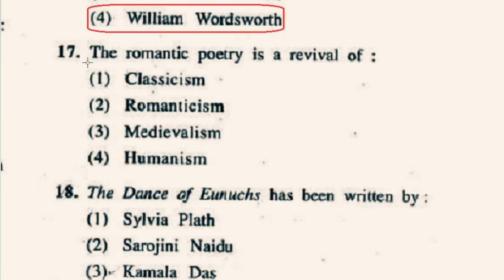Question number 17: The Romantic poetry is a revival of what? Romanticism in English literature began in the 1790s with Wordsworth and Samuel Taylor Coleridge. It can be seen as a rejection of the precepts of order, calm, harmony, balance, idealization and rationality that typified classicism. In other words, the Romantic movement is termed as a revival of, or reaction against, classicism. So option 1st, classicism, will be the correct option.